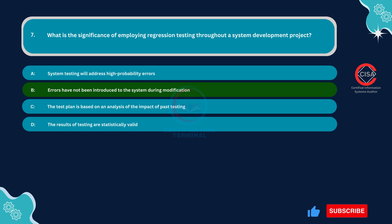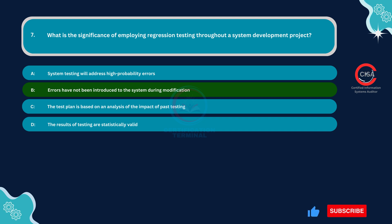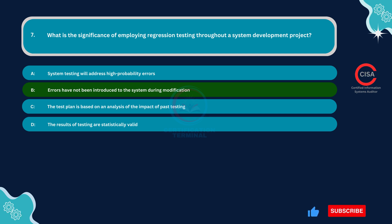This option accurately reflects the significance of employing regression testing throughout a system development project. Regression testing ensures that modifications or updates made to the system do not inadvertently introduce new errors or disrupt existing functionality. By retesting previously working components, regression testing helps maintain the stability and reliability of the system as it evolves, ensuring errors have not been introduced during modification.